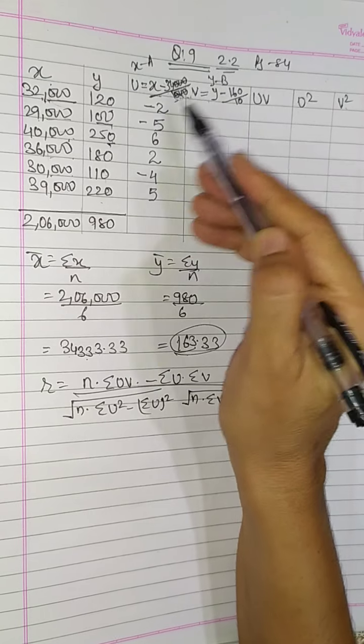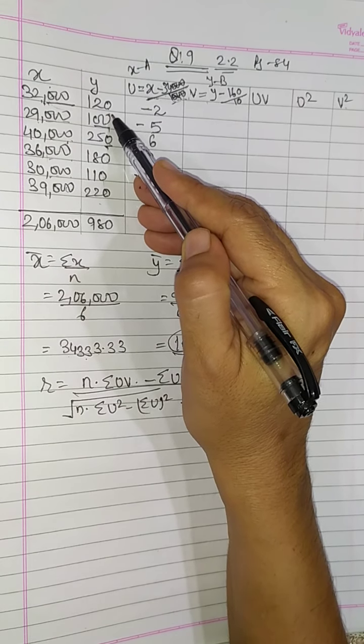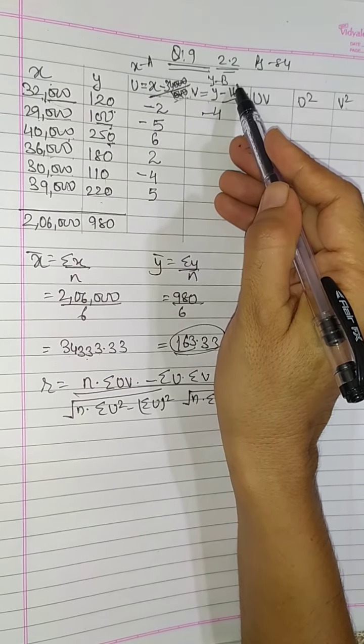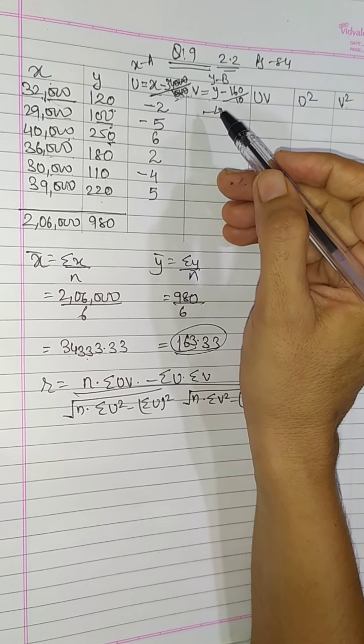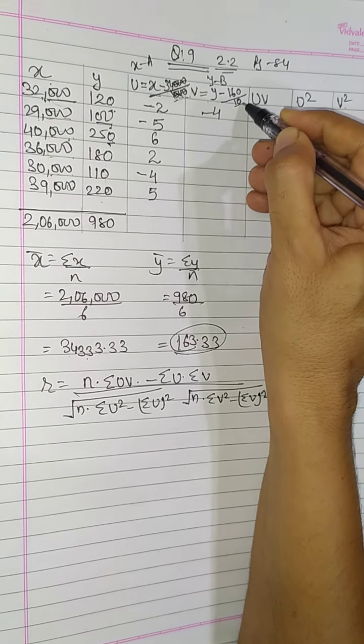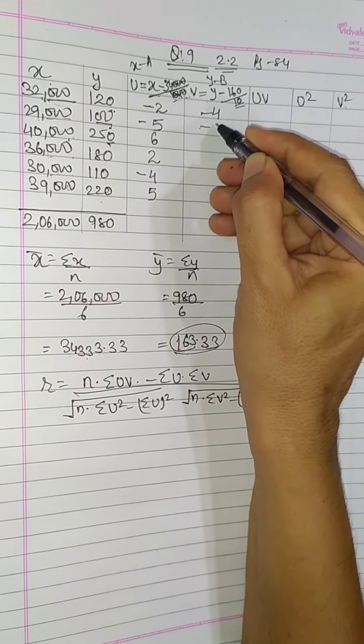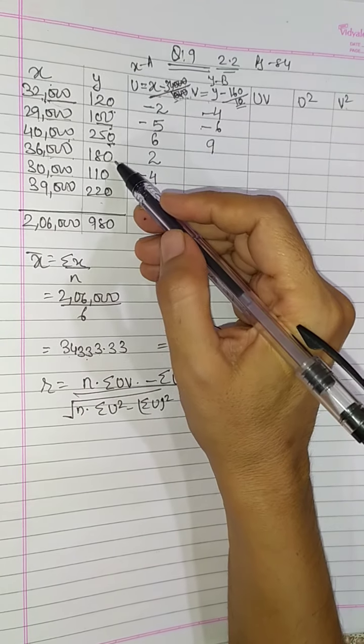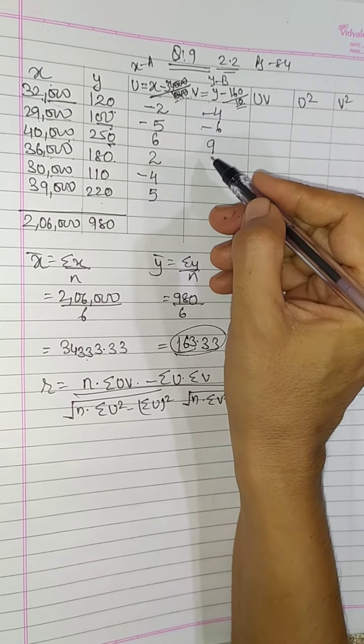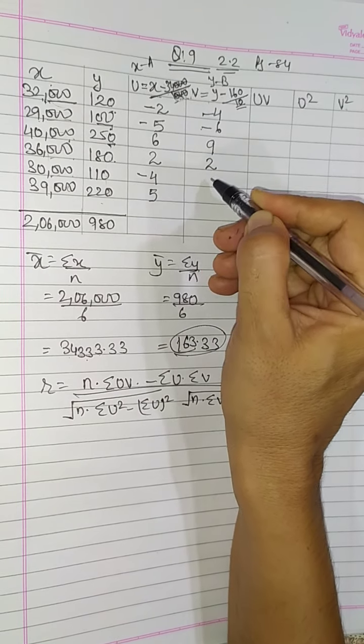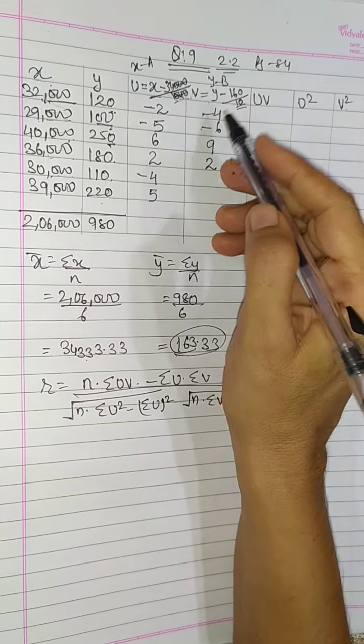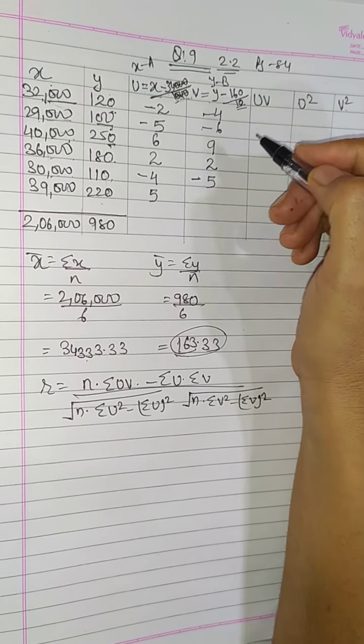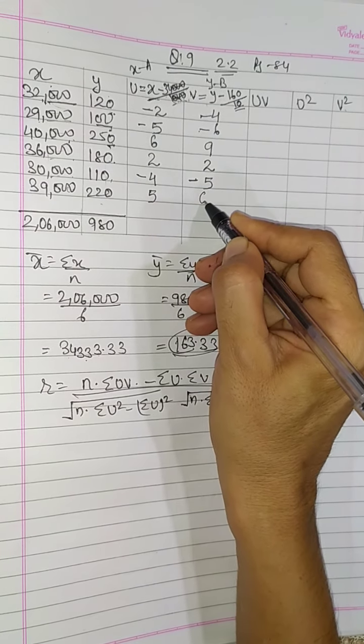Now here I have assumed 160. So see, 120 minus 160 is minus 40, but upon it is 10, so what happens is minus 4. 100 minus 160, obviously minus 60, but if there is zero common, so I will keep 10 at the bottom, so 0 to 0 will cut, so it will be 6. 250 minus 160 is 90, 90 upon 10 is 9. 180 minus 160 is 20, 20 divided by 10 is 2. 110 minus 160 is minus 50, so minus 5. 220 minus 160 will be 60, so 6.